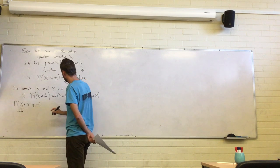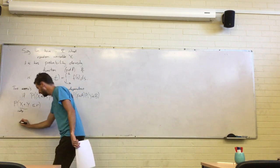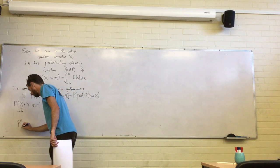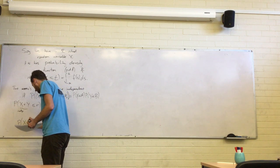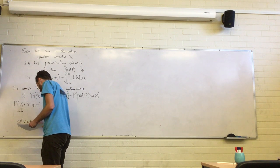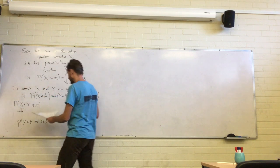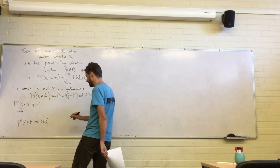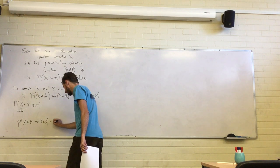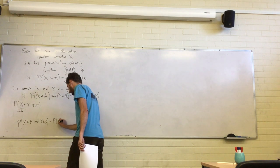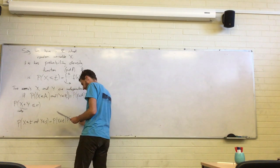We want to think about the probability density function for x and y jointly. So the probability that x is less than t and y is less than s, if we're assuming x and y are independent, is just the probability that x is less than t times the probability that y is less than s.